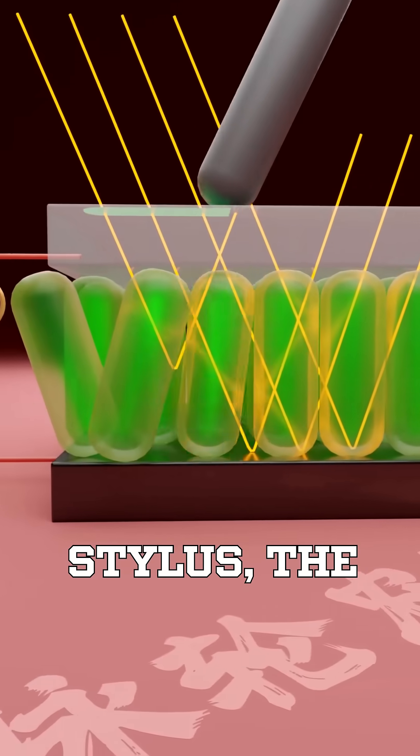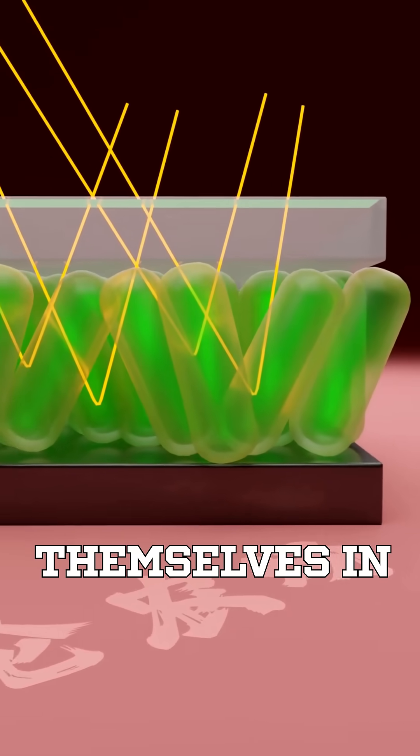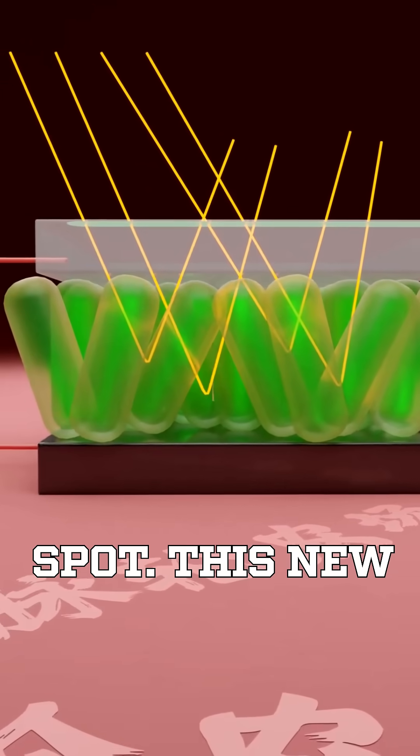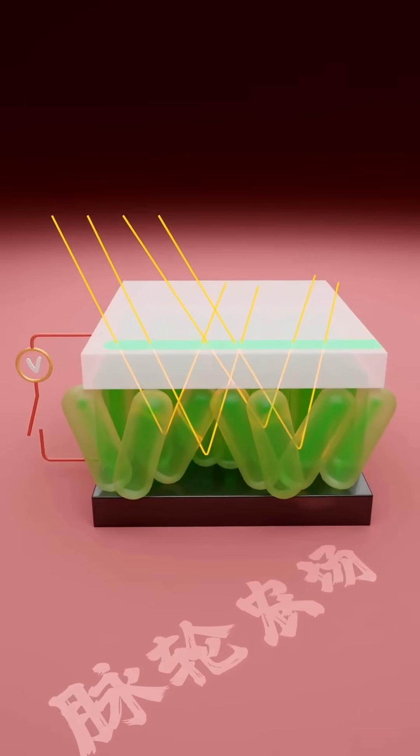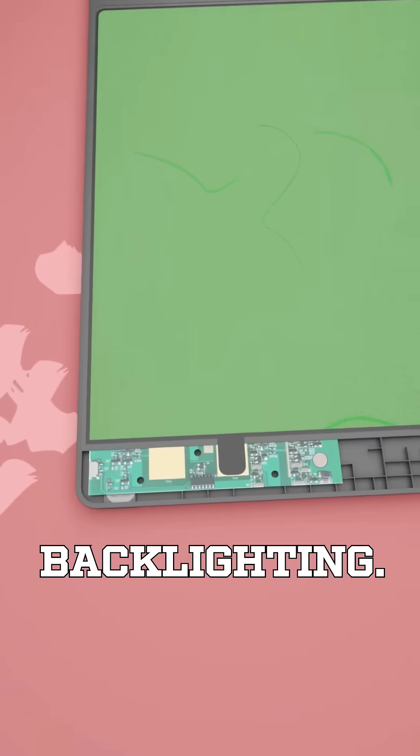Now when you press down with the stylus, the liquid crystals rearrange themselves in that specific spot. This new alignment reflects light back to your eyes, and that's how you see your drawing or writing, thanks to light reflection, not backlighting.